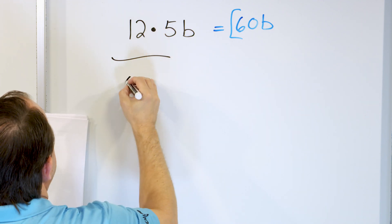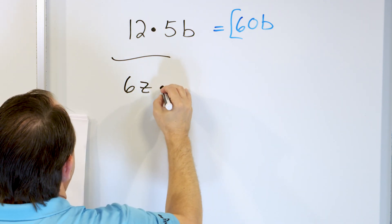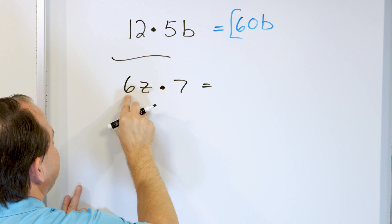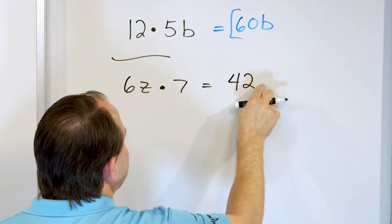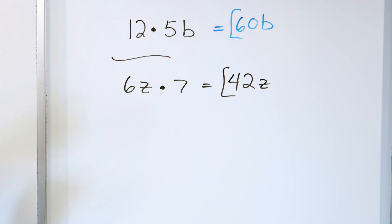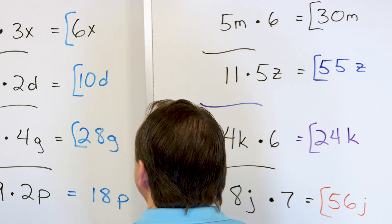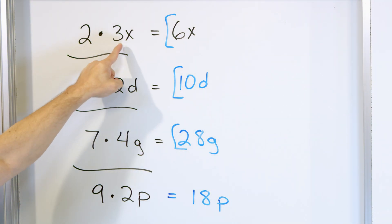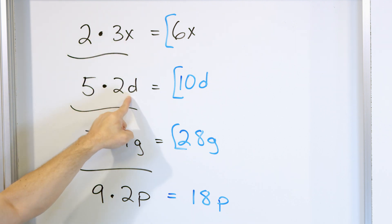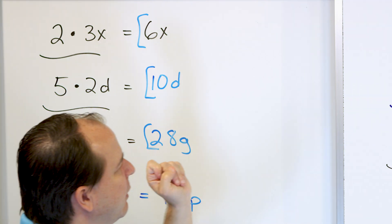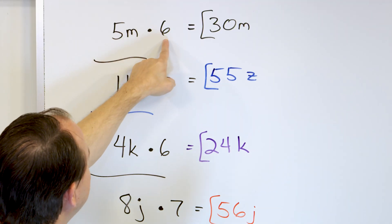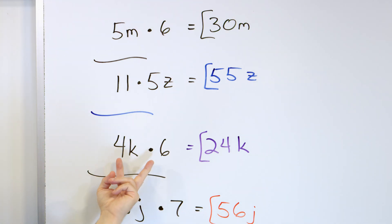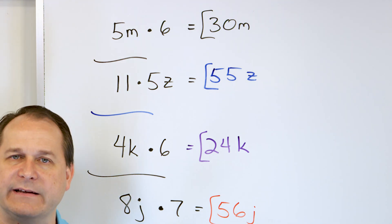Let's say we have 6 times z times 7. I have 6 zebras, I multiply that amount by 7, so 6 times 7 is 42, and then the Z comes along because I'm talking about zebras: 42Z. So this is how we handle multiplying. Every problem was a number times something that involves a variable. Here we also flipped it around where it's a variable term times a number, because the order of multiplication doesn't matter — you get exactly the same thing.